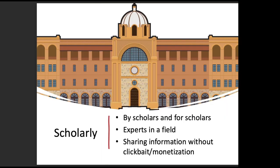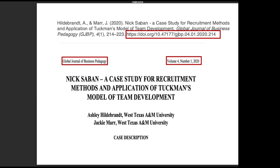Scholarly sources are created by scholars for scholars. Books written by experts in a field, conference papers, review articles, theses, and dissertations fall under this category. Look at this article titled 'Nick Saban: A Case Study for Recruitment Methods and Application of Tuchman's Model of Team Development.' This is a scholarly source.